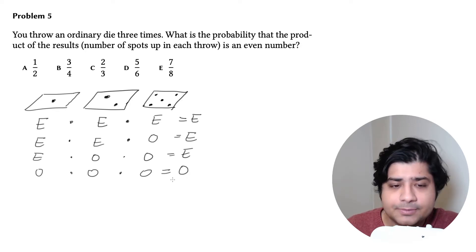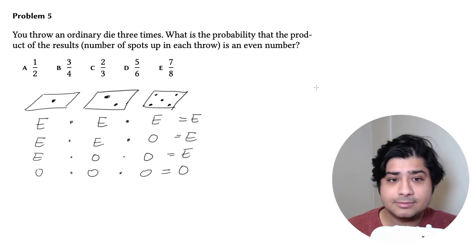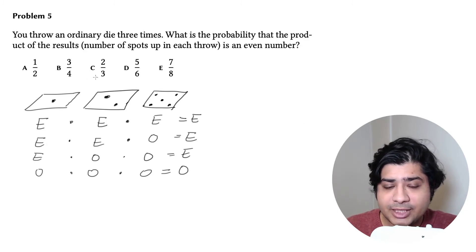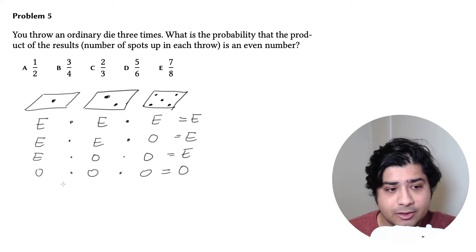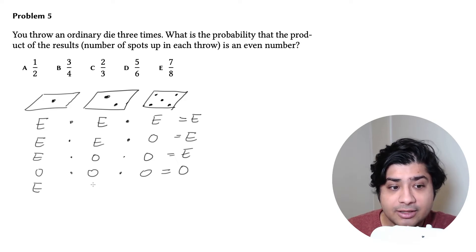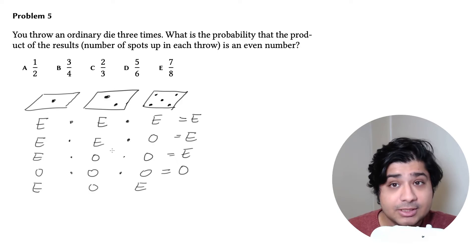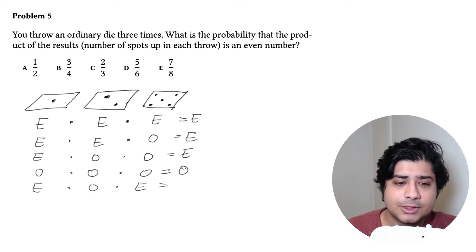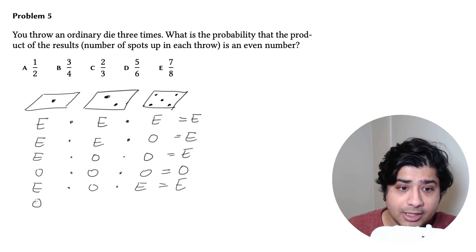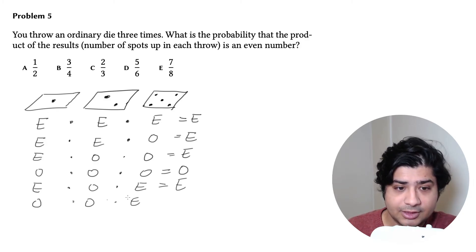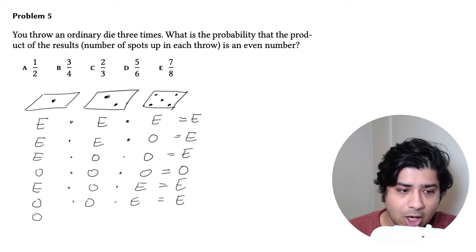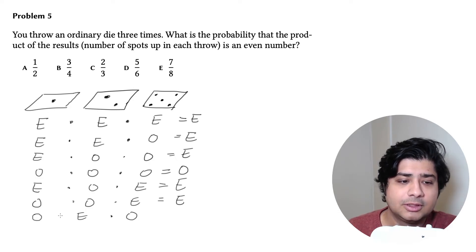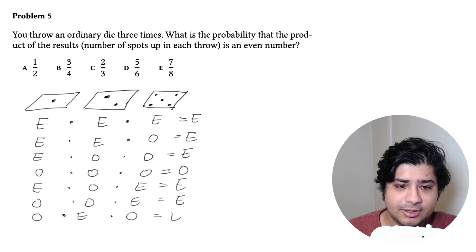But we haven't taken everything into account. There is more than one scenario we missed: you could roll even, then odd, then even — we didn't include that. That's another even result. And we also have odd, odd, even, which is also even. And then odd, even, odd — which gives an even number once more.